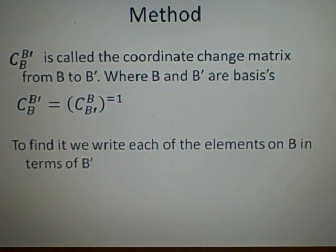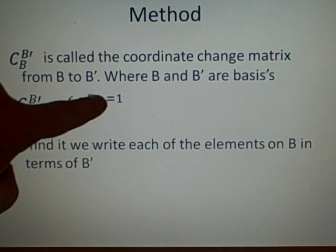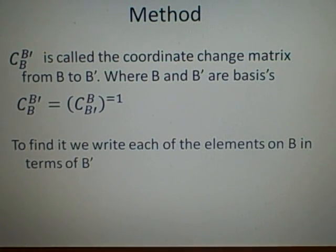The method: C with B down there and B prime at the top is called the coordinate change matrix from B to B prime. So it's from bottom to top, where B and B prime are basis's. And a little thing we should know here is that C_B^B' equals C_B'^B inverse. That should be a minus, not an equals.